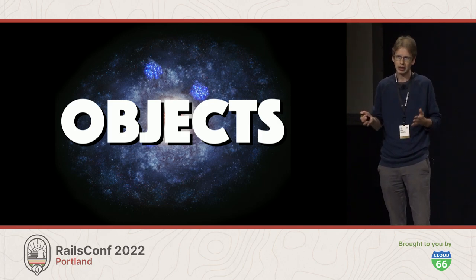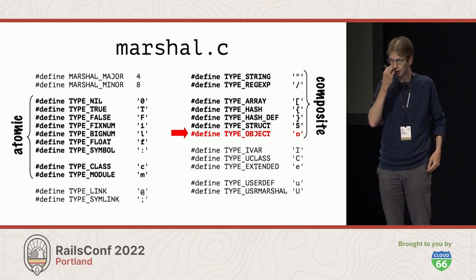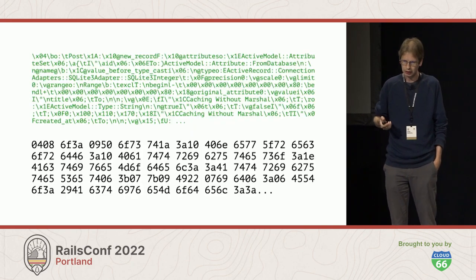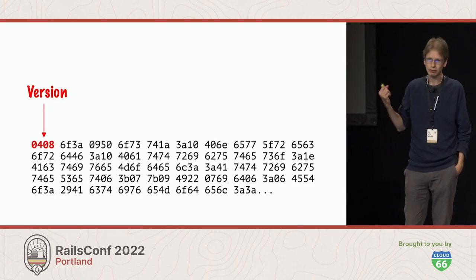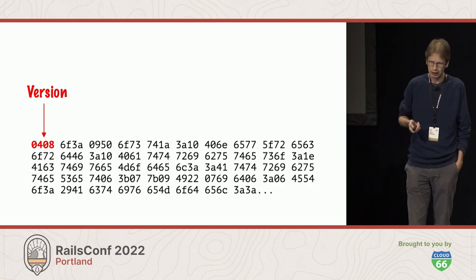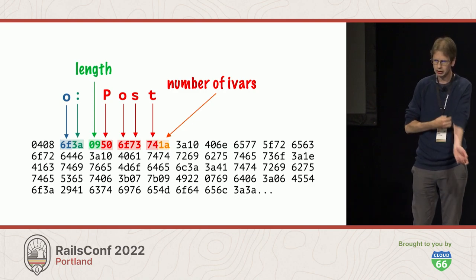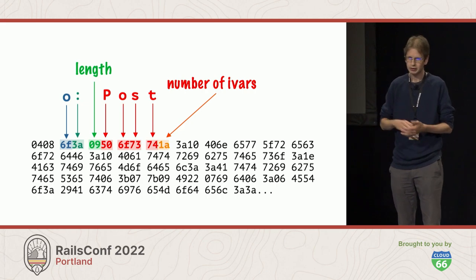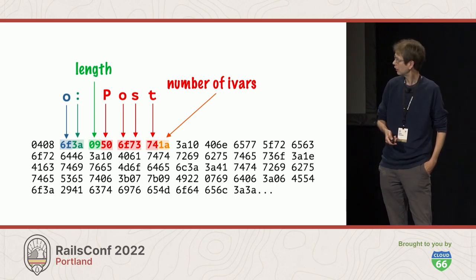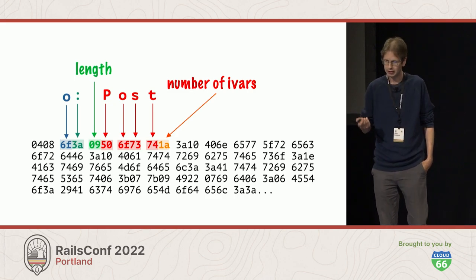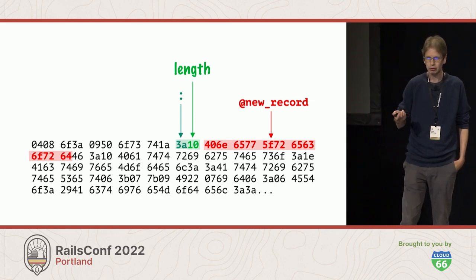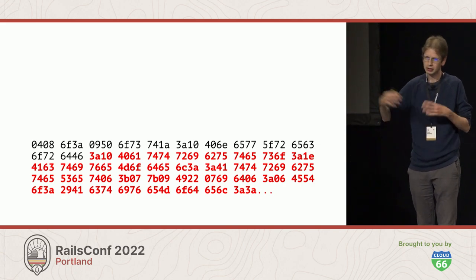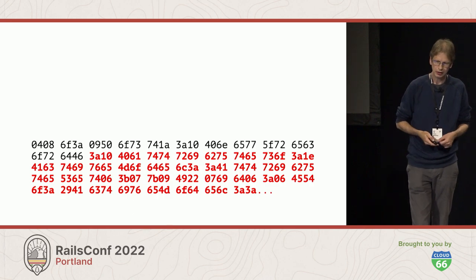How does Marshall encode objects? There's a type called type_object represented by ASCII 'o'. Taking that byte string and converting to hex: first comes the version, then everything is an object starting with lowercase 'o'. Then the class name as a symbol — a colon represents a symbol. It has a length — four, stored as nine due to an efficient integer encoding. Then 'Post'. Then the number of instance variables, followed by all instance variables as name-value pairs. Each instance variable can in turn have other objects with their own instance variables, which is how this gets very big very fast.